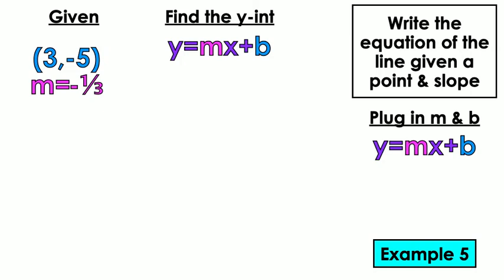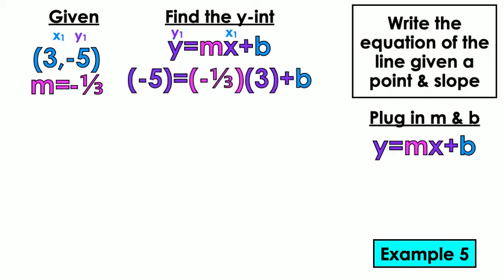Two more examples. Five. One more. Yeah. Five and six. So 3 comma negative 5 M equals negative 1 third. I have X1. I have Y1. Plug them in. So for Y1, we plug in negative 5 equals M, which is negative 1 third. And then 3 plus B. So negative 1 third times 3.